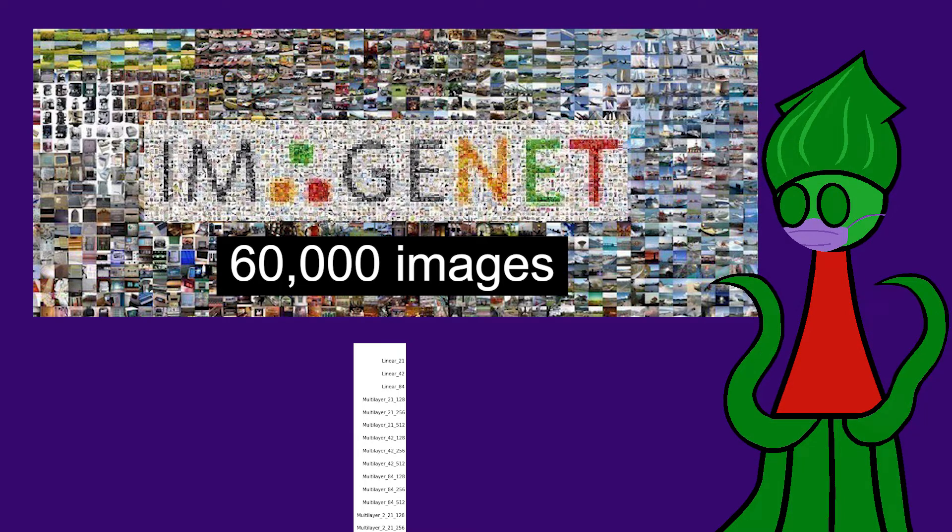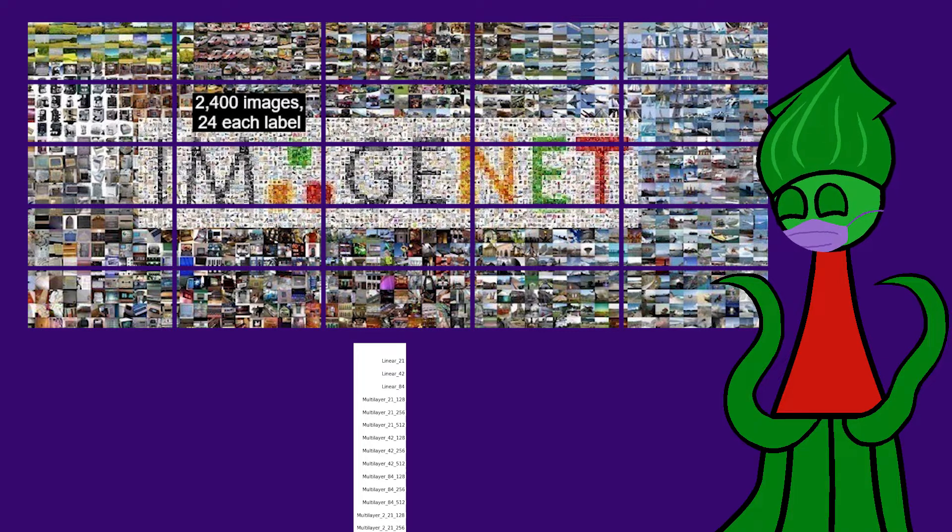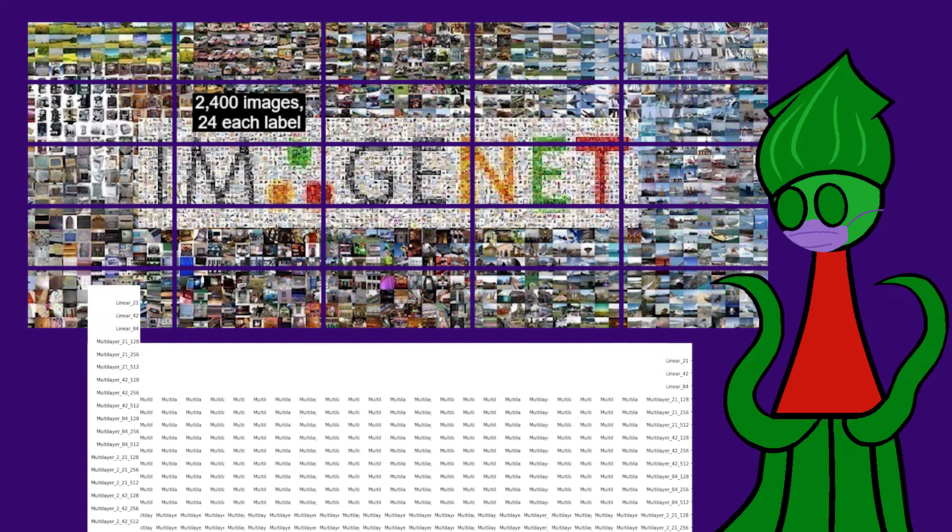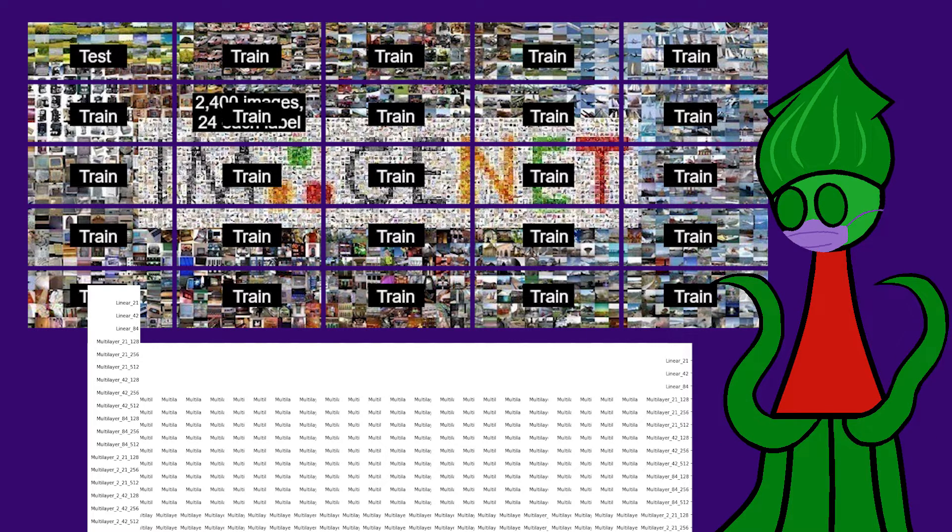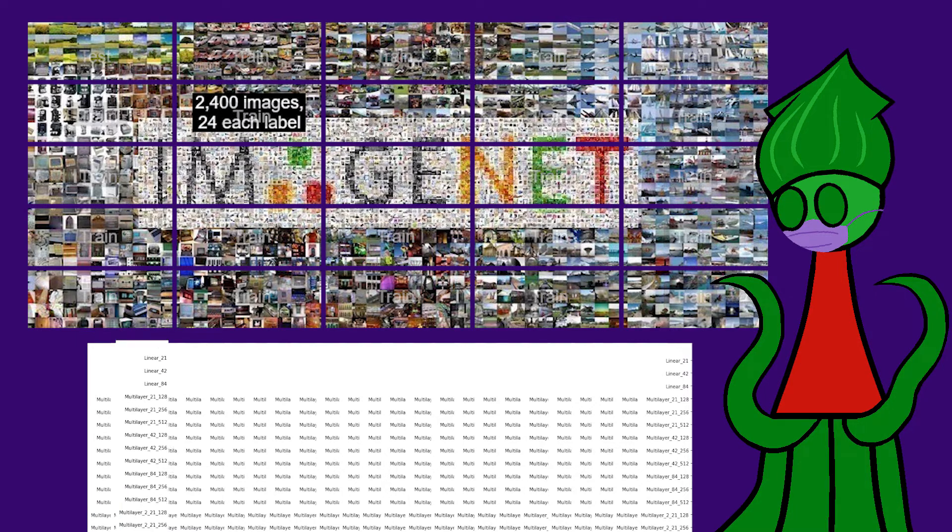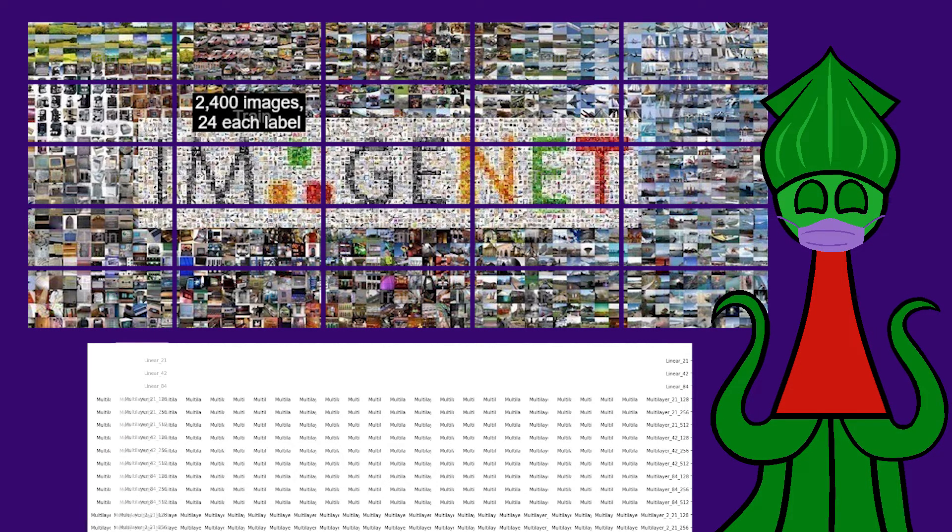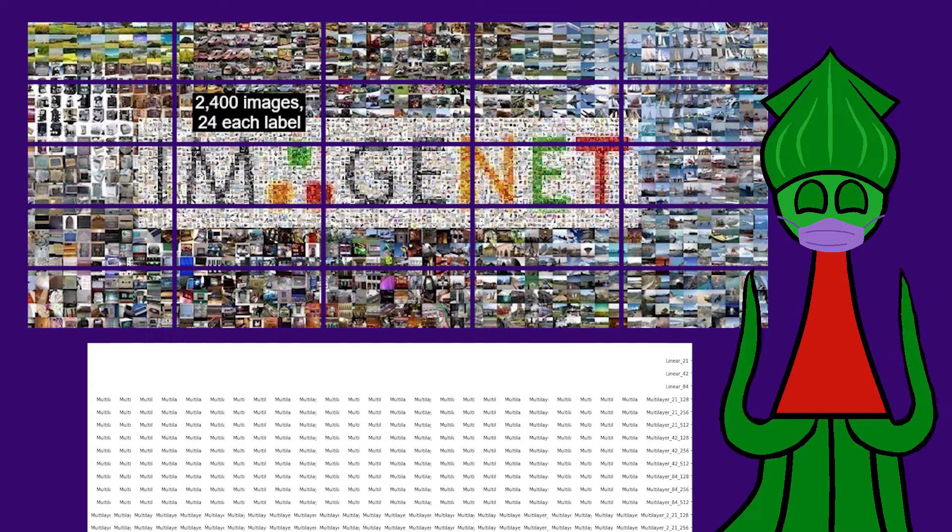I split the 60,000 images into 25 groups of 2,400 images, each group having 24 images of each of the 100 labels. Then, I made 25 copies of my 39 models. The first copy of each model is trained on everything but the first data group. For 57,600 images, 576 of each label. The second copy of each model is trained on everything but the second data group. And so on. Then, we test the 25 copies of each model on their 25 unique test data groups. That's cross-validation.